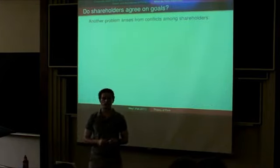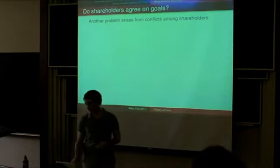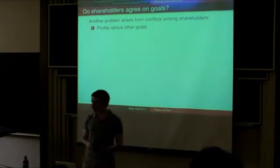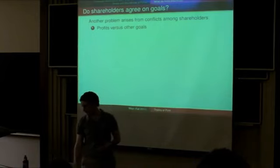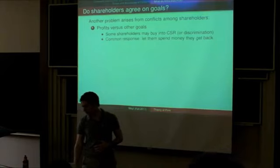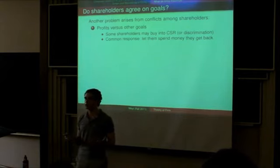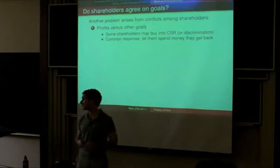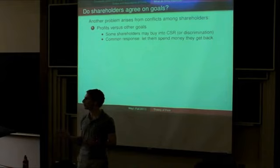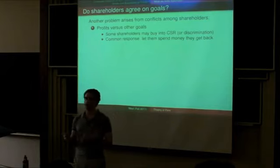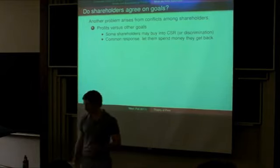Another problem is whether shareholders agree on the goals for the firm. Some shareholders want to maximize profit; others have other goals, like corporate social responsibility. But there are also nasty things shareholders might want — for example, some might not want the firm to employ or sell to certain racial groups. That was actually a real problem during the 1950s, with fights in boardrooms over policies on segregation. So it's not just for good causes, but also for bad causes, that shareholders might diverge from the goal of maximizing profits.